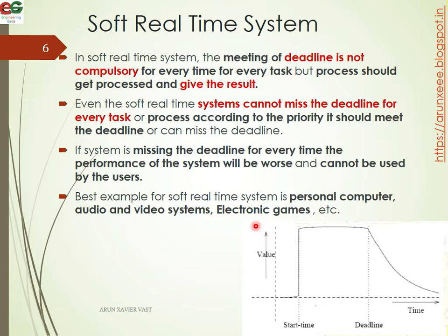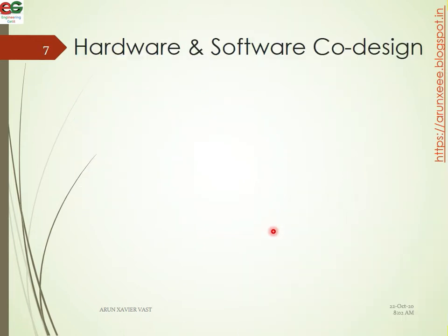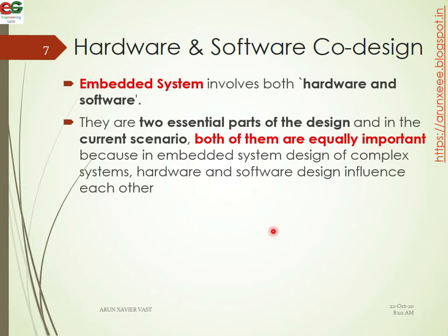Next, we will explain hardware and software co-design. What is co-design? Hardware and software co-design involves both hardware and software. These are two essential parts of the design, and in the current scenario, both of them are equally important.